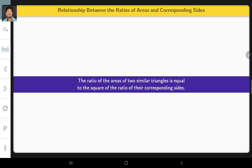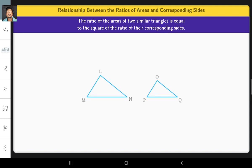The theorem states that the ratio of the areas of two similar triangles is equal to the square of the ratio of their corresponding sides. Here, the triangle LMN is similar to triangle OPQ.